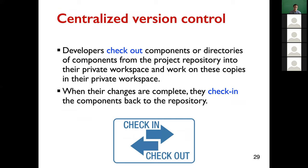There are two types of version control systems. The first is centralized version control — for example, Subversion. In centralized version control, each developer checks out components from a public repository into their private workspace, works on those copies, and when changes are complete, checks the components back into the repository. There is only one central repository, so we usually work on part of the code and check it back in.